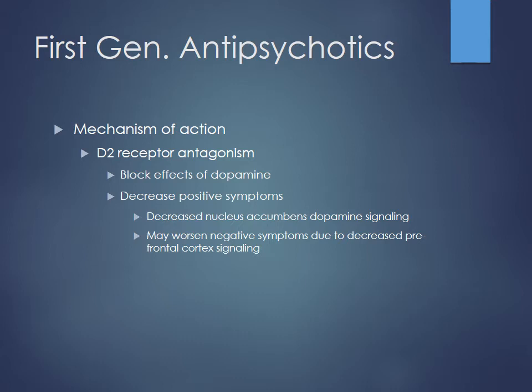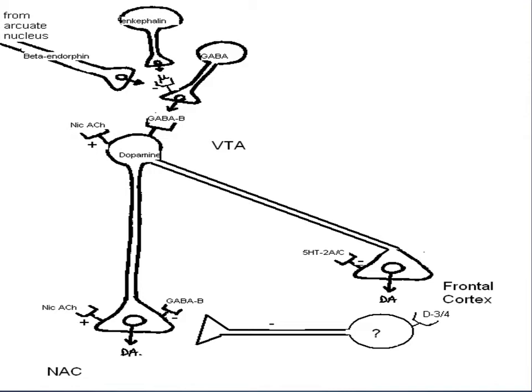Because the frontal cortex is dopamine-hypoactive, blocking D2 receptors worsens negative symptoms. Patients may not be hallucinating as much, but they'll have more avolition and alogia. Looking at the pathway slide — even though a neuron is overfiring dopamine, those receptors are blocked so it can't have as much activity, which addresses positive symptoms. But in the frontal cortex, blocking that dopamine activity worsens the negative symptoms.